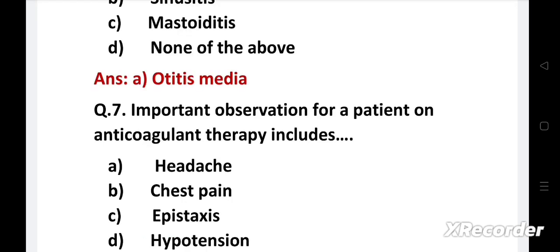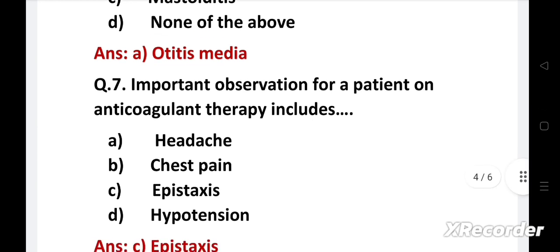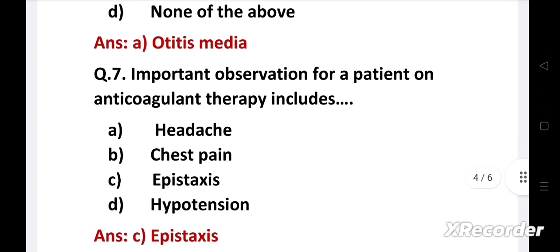Next question: Important observation for a patient on anticoagulant therapy includes: Option A - Headache, B - Chest pain, C - Epistaxis, D - Hypotension. Right answer is Option C - Epistaxis. If a patient is on anticoagulant therapy, then we should observe for epistaxis.